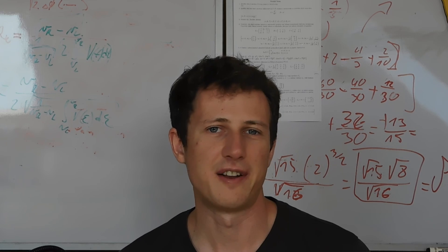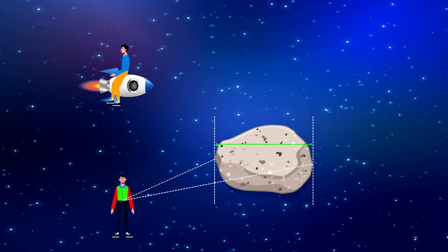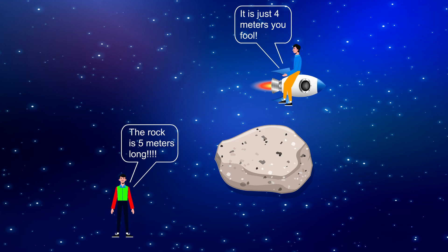In special relativity there is this phenomenon called length contraction. It says that the measured length of an object depends on the relative velocity of the object and the observer.